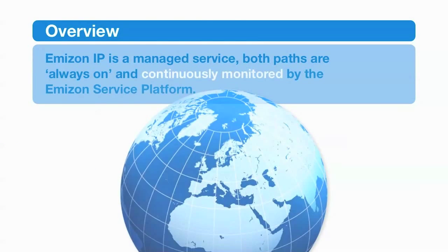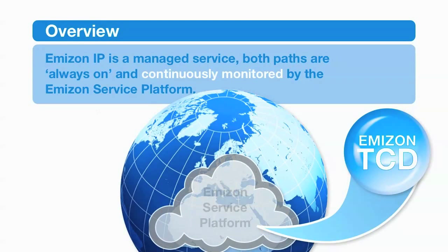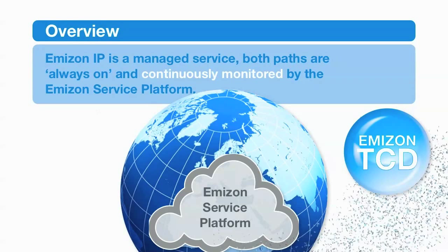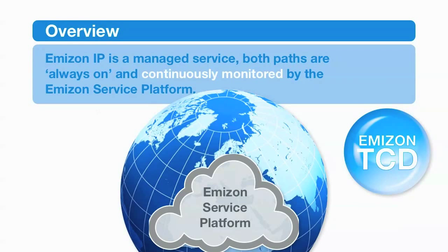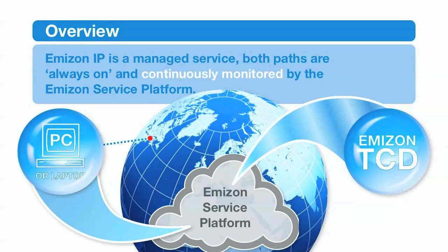Amazon IP is a managed service. Both paths are always on and being continuously monitored by the Amazon service platform. In the event of a problem, either malicious or accidental, with the primary broadband path, alarms will be sent over the GPRS path. This means an alarm will always get through.